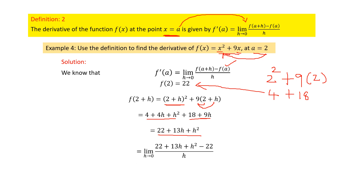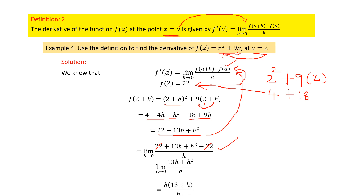Now substitute f(2+h) and f(2) into the formula. After cancelling 22 − 22, we have two terms in the numerator and h in the denominator. There is a common factor h in the numerator; taking h outside gives h(13 + h). Cancelling h and h, then substituting the limit h → 0, we get 13 as the final answer.